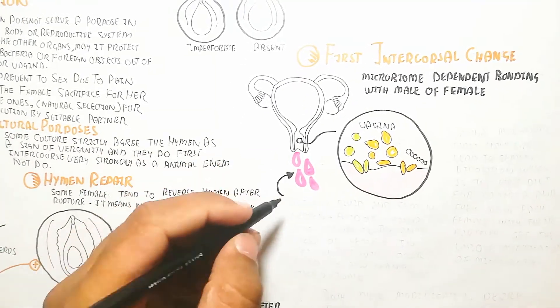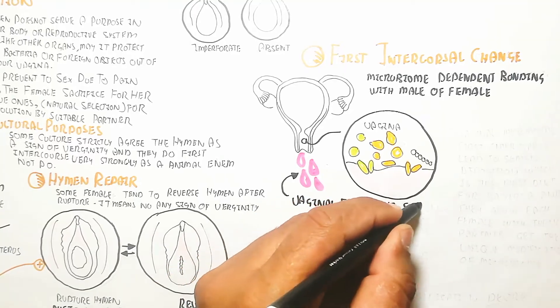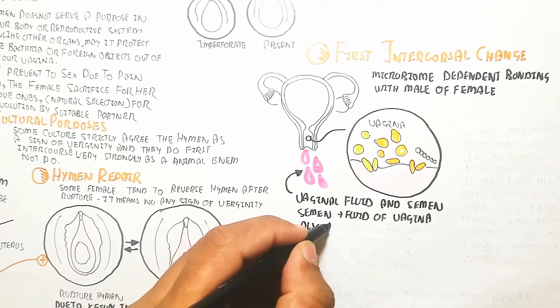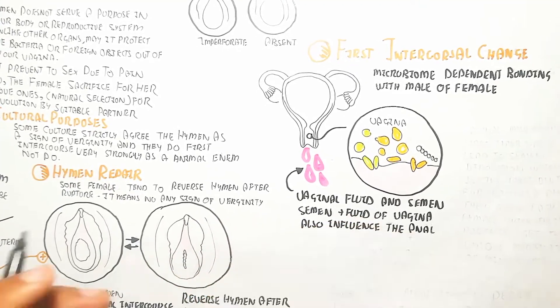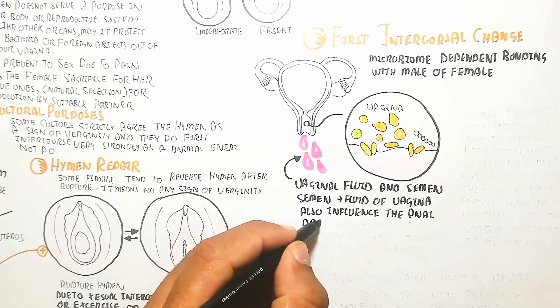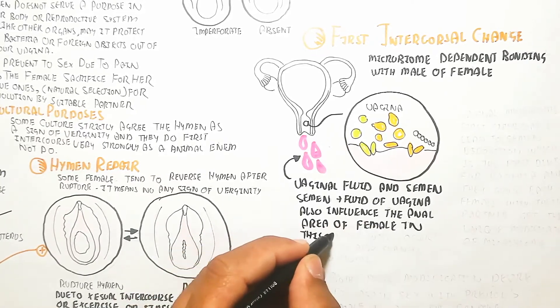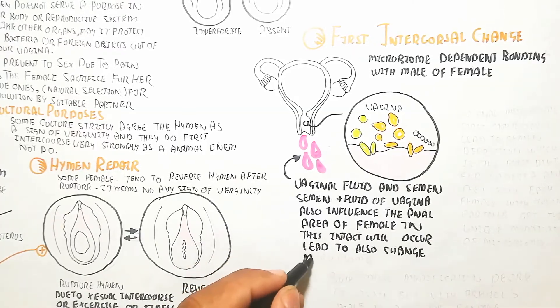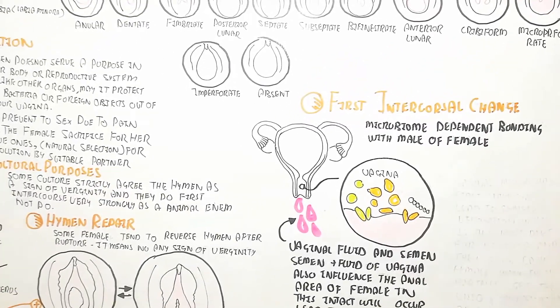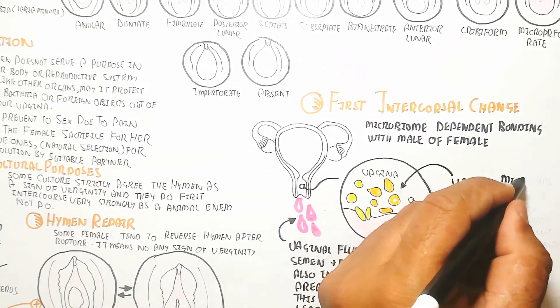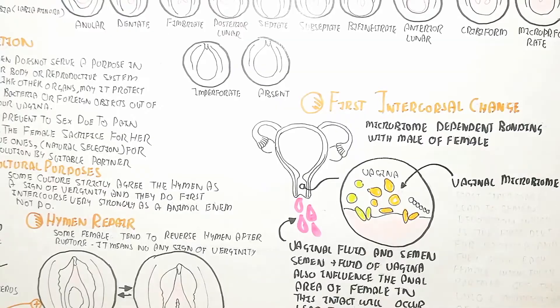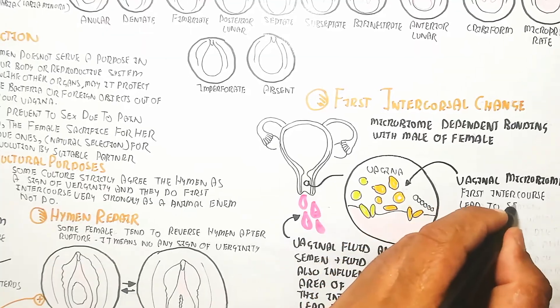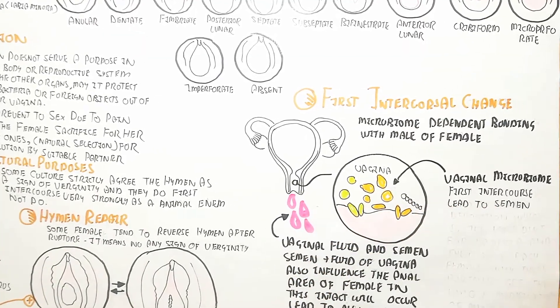Semen plus vaginal fluid also influences the microbiome and the anal area of the female. This interaction leads to microbiome changes. The vaginal microbiome is specific. Whenever intercourse occurs, the microbiome will be changed due to semen from the male as sperm ejaculation.